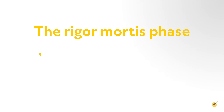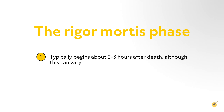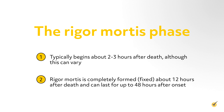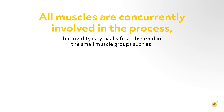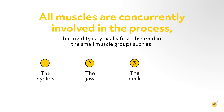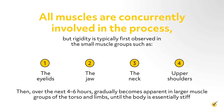The rigor mortis phase typically begins about two to three hours after death, although this can vary. Rigor mortis is completely formed or fixed about 12 hours after death and can last for up to 48 hours after onset. All muscles are concurrently involved in the process, but rigidity is typically first observed in the small muscle groups such as the eyelids, the jaw, the neck, and upper shoulders, and then over the next four to six hours gradually becomes apparent in larger muscle groups of the torso and limbs until the body is essentially stiff.